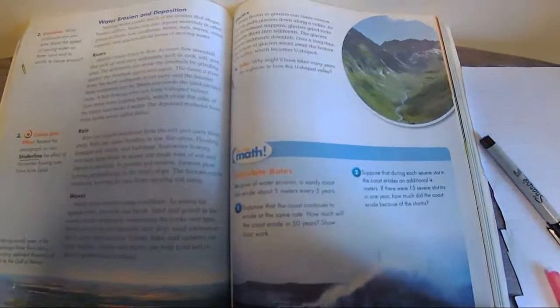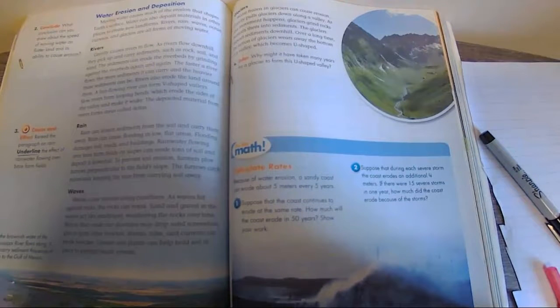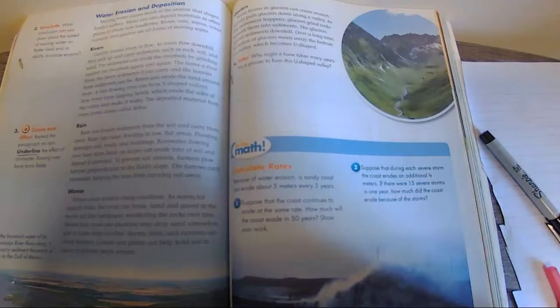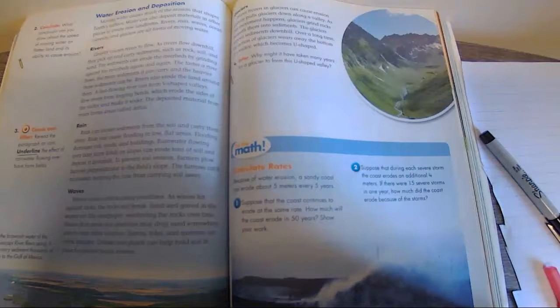Glaciers. Water frozen in glaciers can cause erosion. Gravity pulls glaciers down along a valley. As this happens, glaciers grind rocks beneath them into sediments. The glaciers deposit sediments downhill.